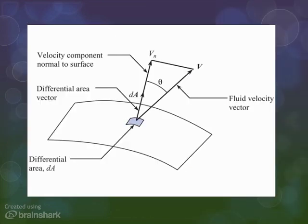So, let's take a look at this figure. We have a patch of area called dA, and a velocity vector is crossing it. A velocity vector crossing it is the vector V.